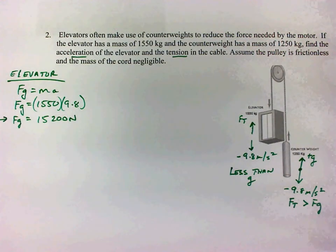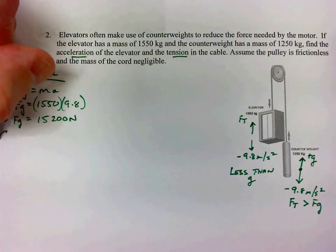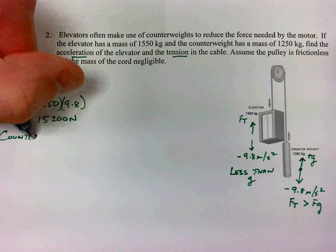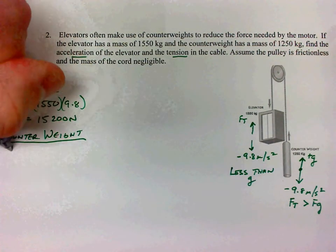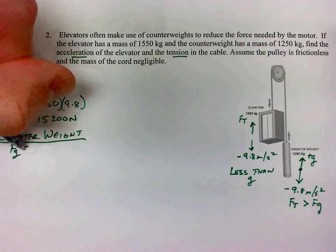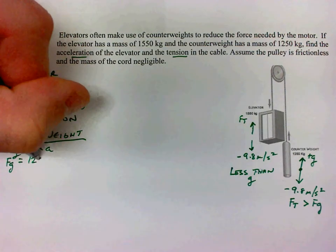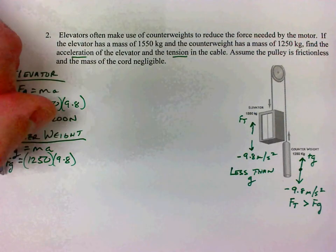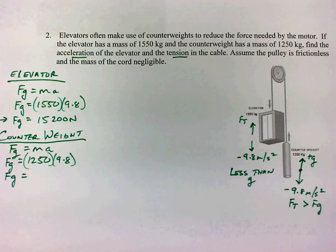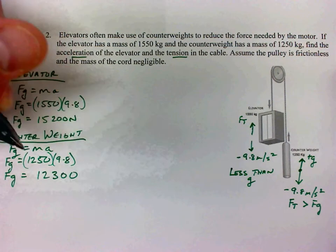Now for the counterweight: FG equals ma, the counterweight has a mass of 1250 kilograms times 9.8, giving us FG of the counterweight equal to 12,300 Newtons (three significant figures).